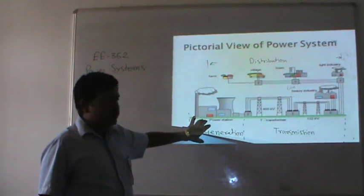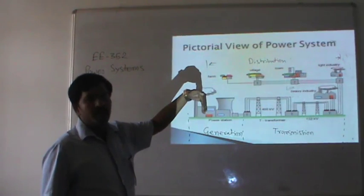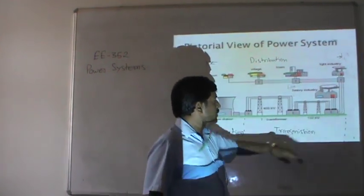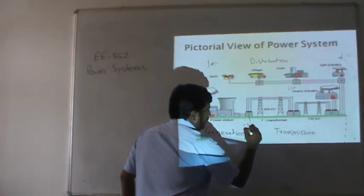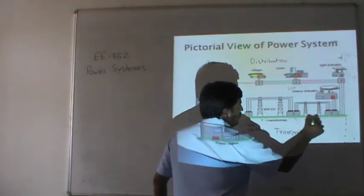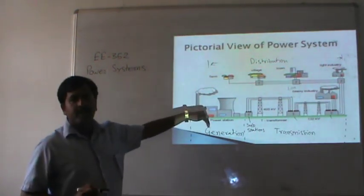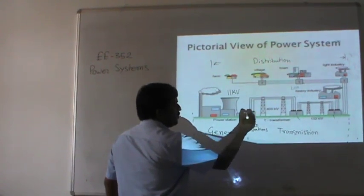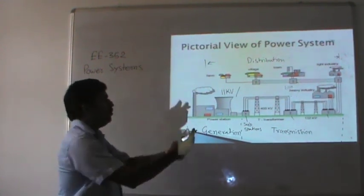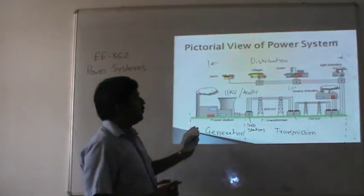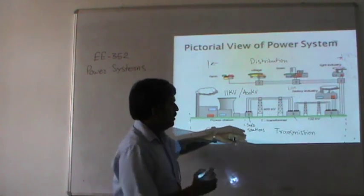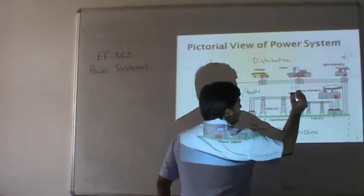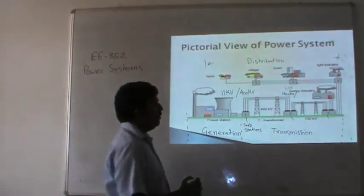Energy is generated at the power station and a high voltage is transmitted through the transmission line. Here you can see a 400 kV transmission line that is stepped down to 132 kV at substations. Electricity is generated at 11 kV, and with the help of a transformer it is stepped up from 11 kV to 400 kV for long-distance transmission. The substation nearer to the load center steps the voltage down from 400 kV to 132 kV.